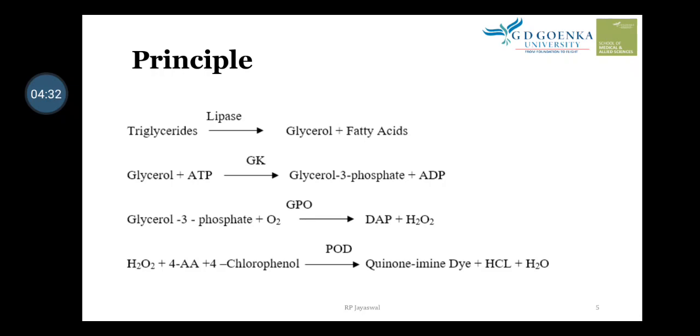Glycerol-3-phosphate, in the presence of oxygen, is converted to dihydroxyacetone phosphate (DAP) plus H₂O₂ by glycerol-3-phosphate oxidase. The H₂O₂ then reacts with 4-aminoantipyrine and 4-chlorophenol in the presence of peroxidase to form a quinone-imine dye complex.